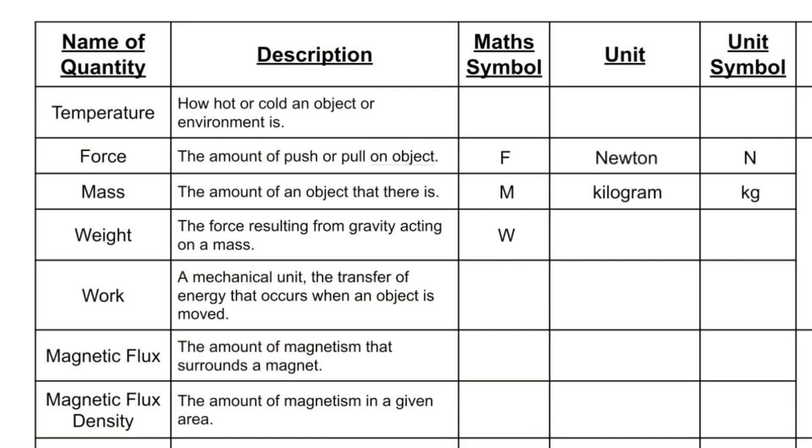Closely related but slightly different is weight. Weight is the force that results from gravity acting on a mass, acting on an object. We use the mathematical symbol W. We measure weight in newtons and give it the unit symbol capital N, just like we did for force. Thinking back to our apple, gravity was pulling on its mass down to the earth. Likewise, as I'm standing on the floor, the earth's gravity is pulling me downwards, meaning I'm exerting a force on the floor — and that force is what we call weight.